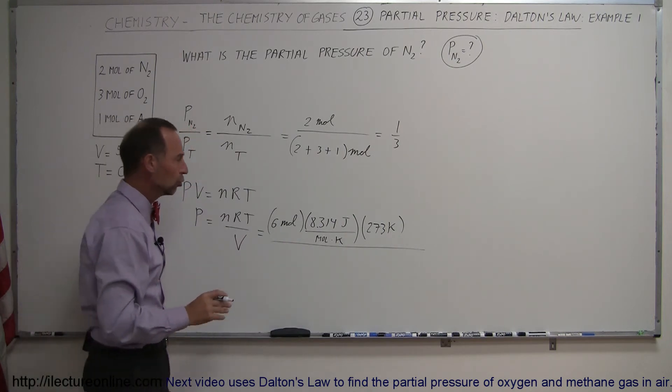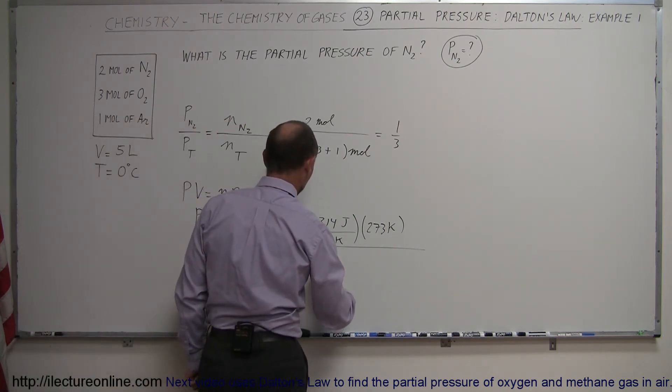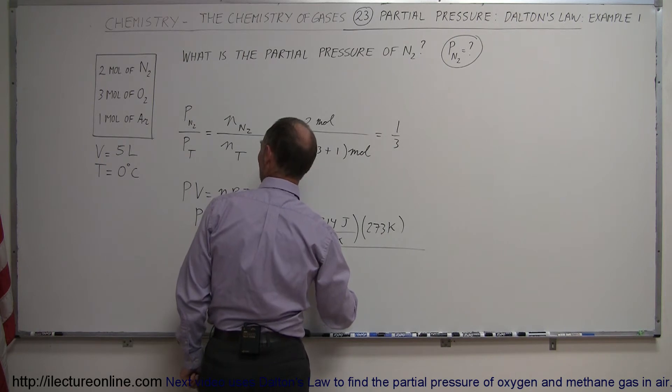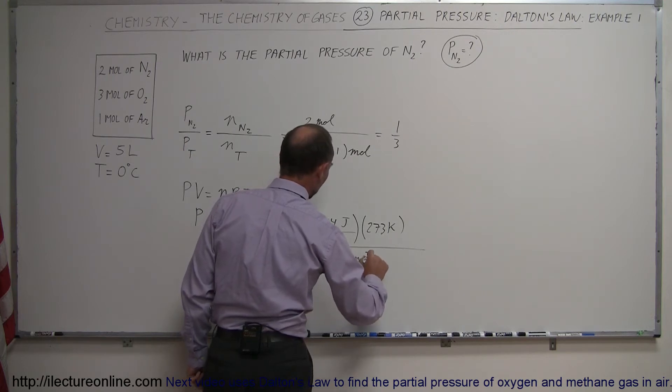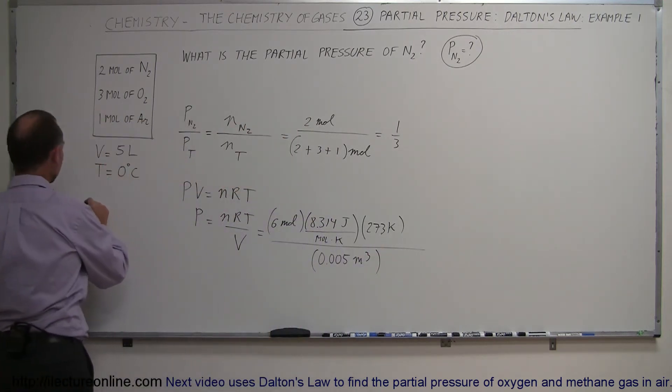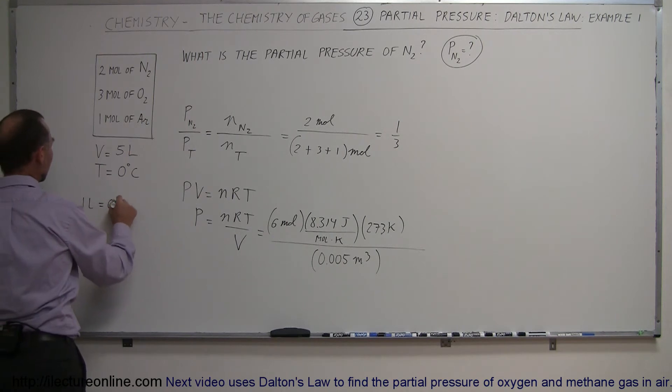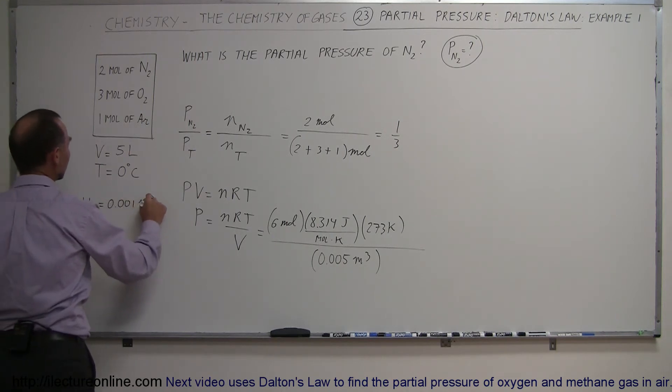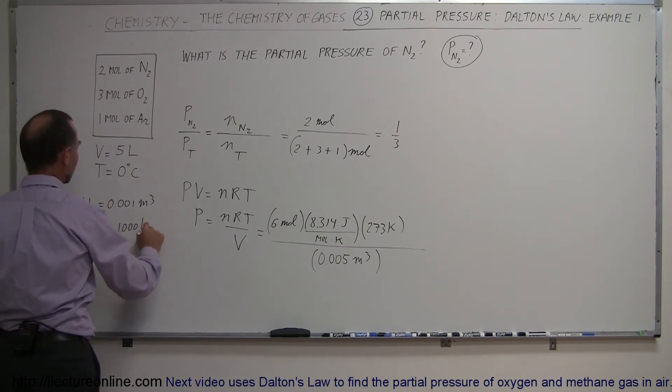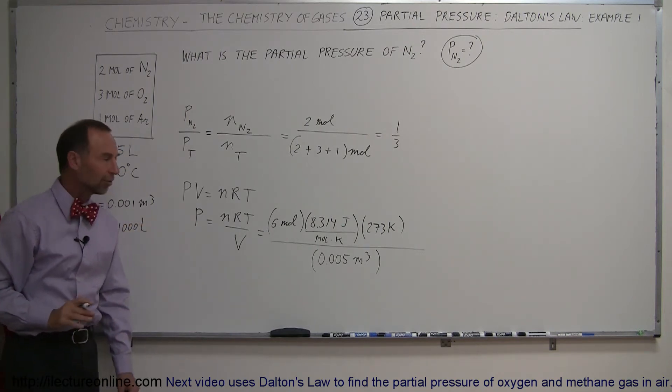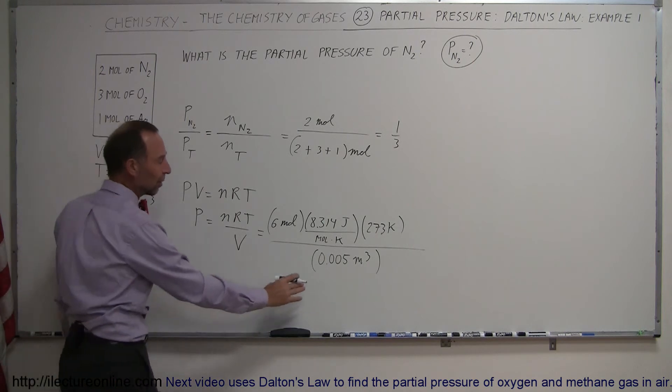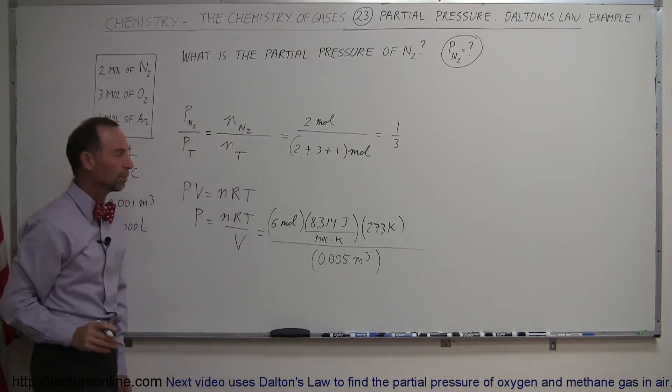Of course, you want to convert that to, not pascals, to cubic meters, I should say. So that would be 0.005 meters cubed. Remember that 1 liter is equal to 0.001 cubic meter, or 1 cubic meter is equal to 1,000 liters. So it's a 1,000 to 1 ratio. So 5 liters then becomes 0.005 cubic meters.